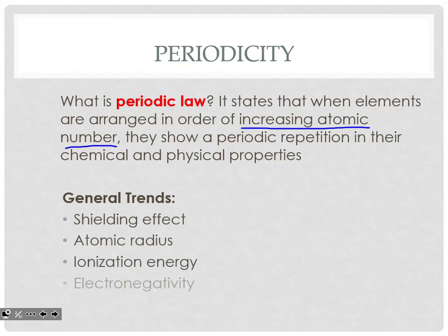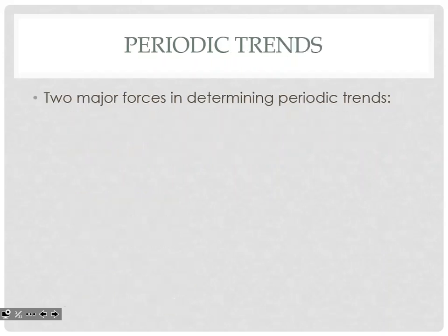The general trends we're going to be looking at are shielding effect, atomic radius, ionization energy, electronegativity, and electron affinity. Now, there are two major forces or reasons as to why the trends happen the way that they happen.